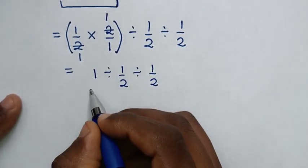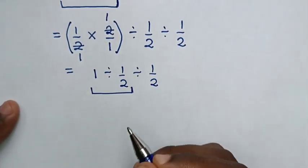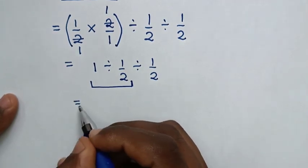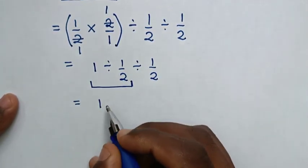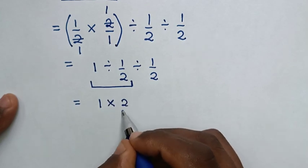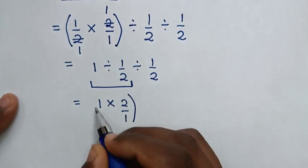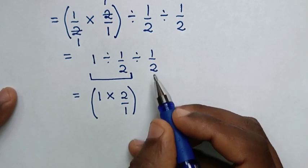Then we'll start to deal with this first operation. So it will be equal to 1 divided by 1 over 2, which is the same as times 2 over 1, bracket, then divided by 1 over 2.